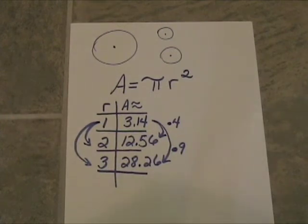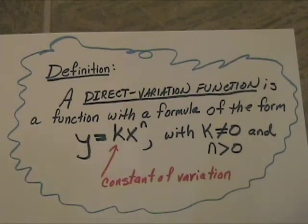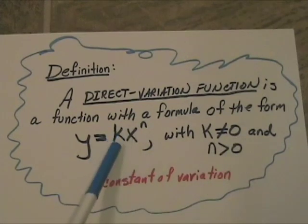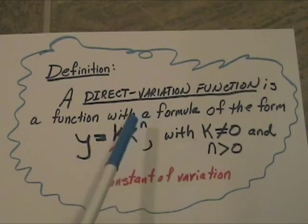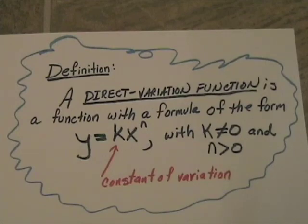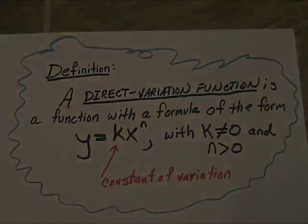So we do have a direct variation, but we say that A varies directly as R squared. Here's the formal definition: a direct variation function is a function with a formula of the form y equals k times x to the nth, with k not equal to zero and n greater than zero. Now k is your constant of variation, which is specific to the problem. The constraint means there will be no negative nor zero exponents.